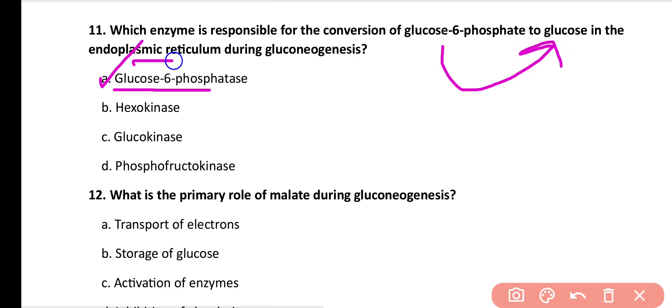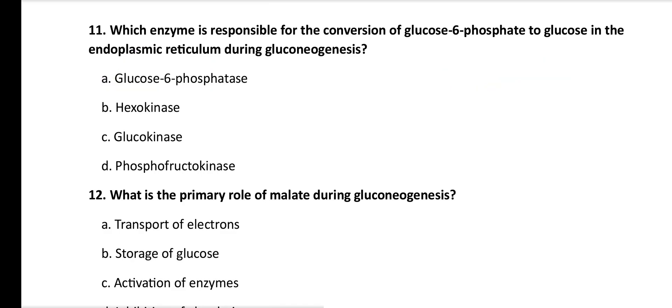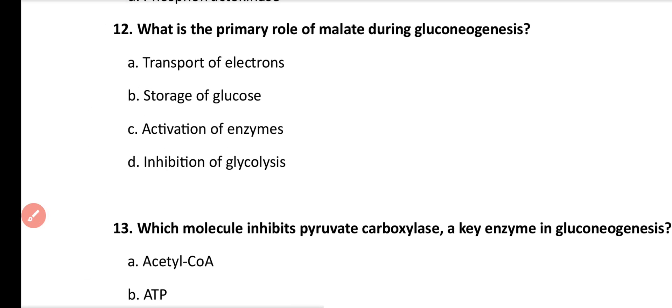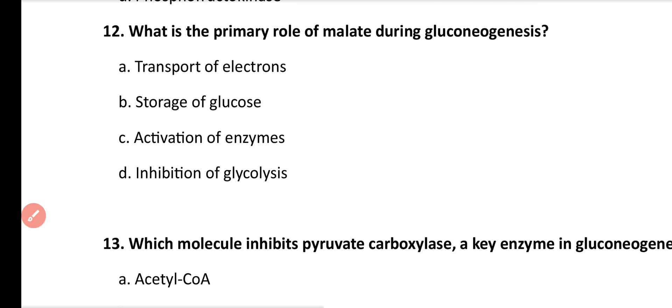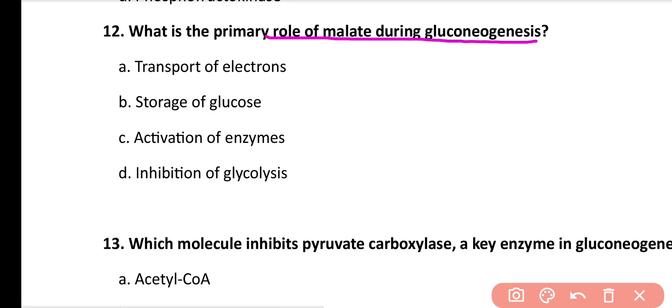Question number 12: What is the primary role of the malate-aspartate shuttle during gluconeogenesis? Options: transport of electrons, storage of glucose, activation of enzymes, inhibition of glycolysis. Correct answer is option A. The malate shuttle is responsible for the transport of electrons during gluconeogenesis.